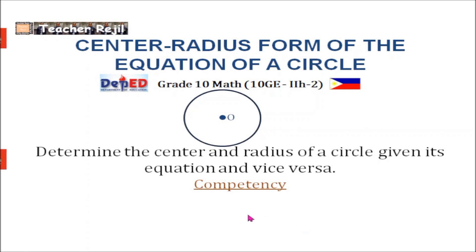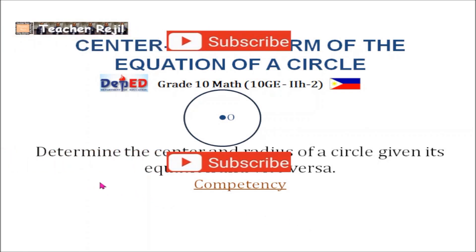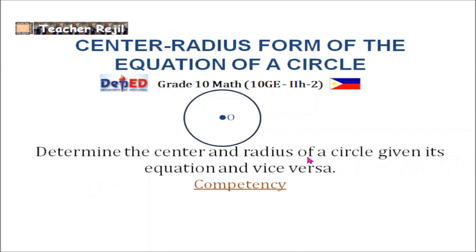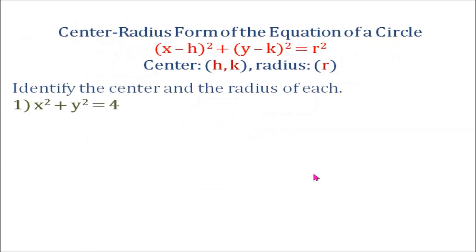The competency in this lesson is to determine the center and radius of a circle given its equation and vice versa. This is the center-radius form of the equation of a circle: the quantity x minus h squared plus the quantity y minus k squared equals r squared. The coordinates of the center are h and k, and the radius has length r.